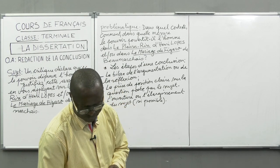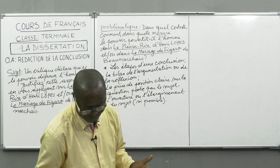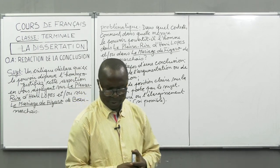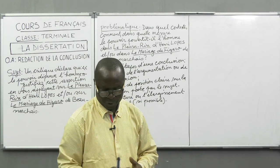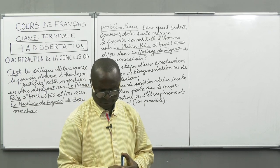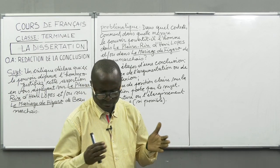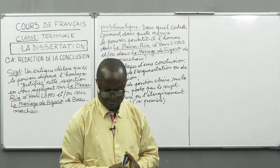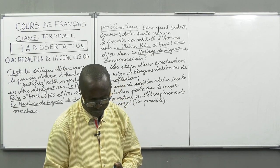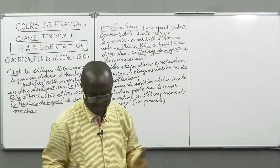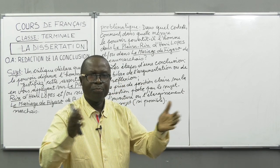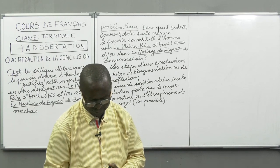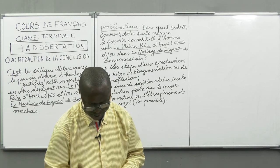Il s'agit donc pour vous de faire le bilan de tout ce que vous avez dit dans le développement. S'agissant par exemple d'un plan dialectique, vous résumez en une phrase la thèse soutenue, puis en une deuxième phrase l'antithèse. La deuxième étape consiste à donner une réponse au problème soulevé par le sujet, en définissant clairement votre position. Enfin, l'ouverture permet la poursuite de la réflexion, comme une provocation pour faire réagir ceux qui liront votre travail.